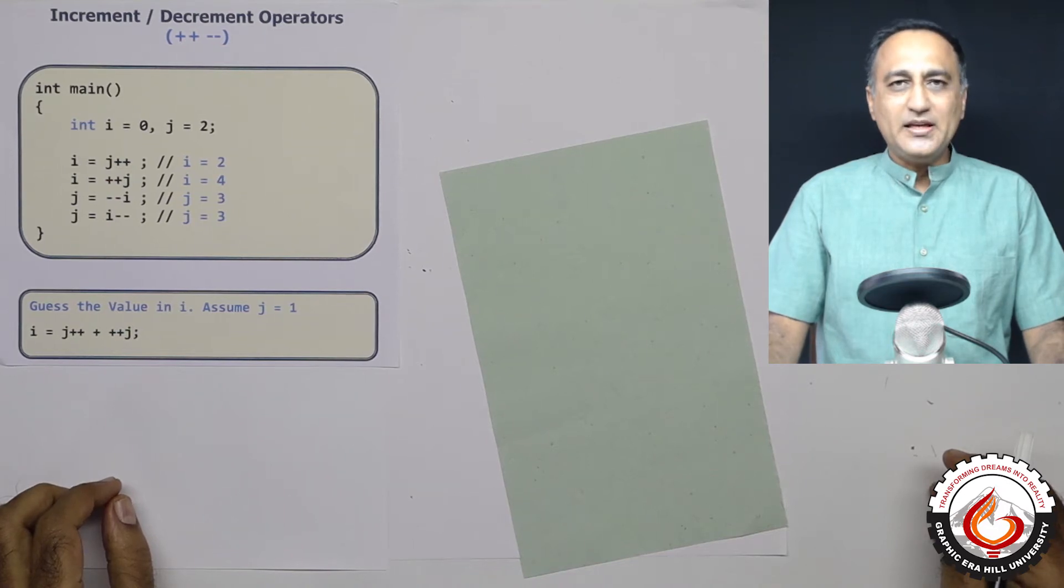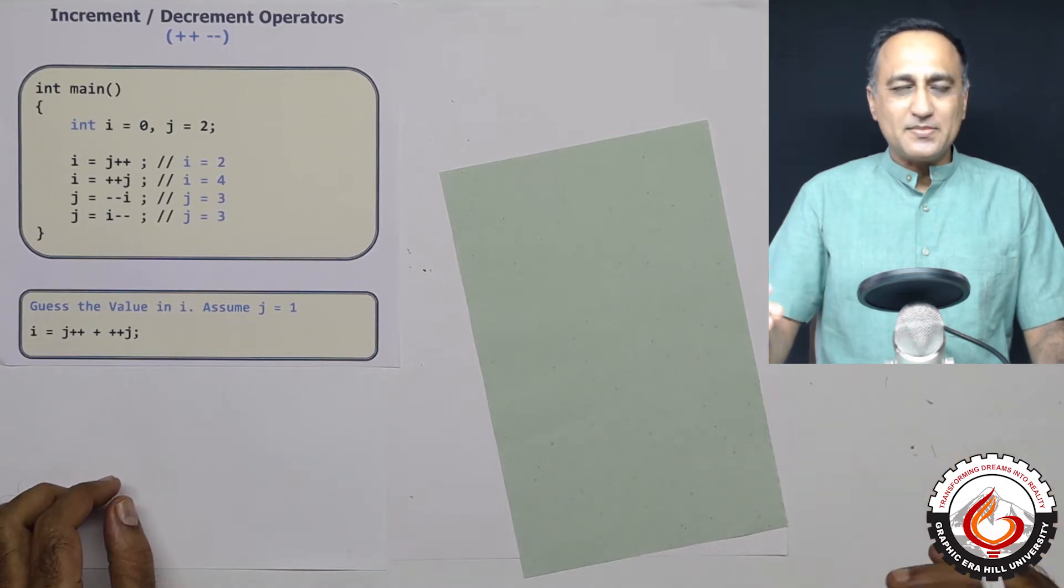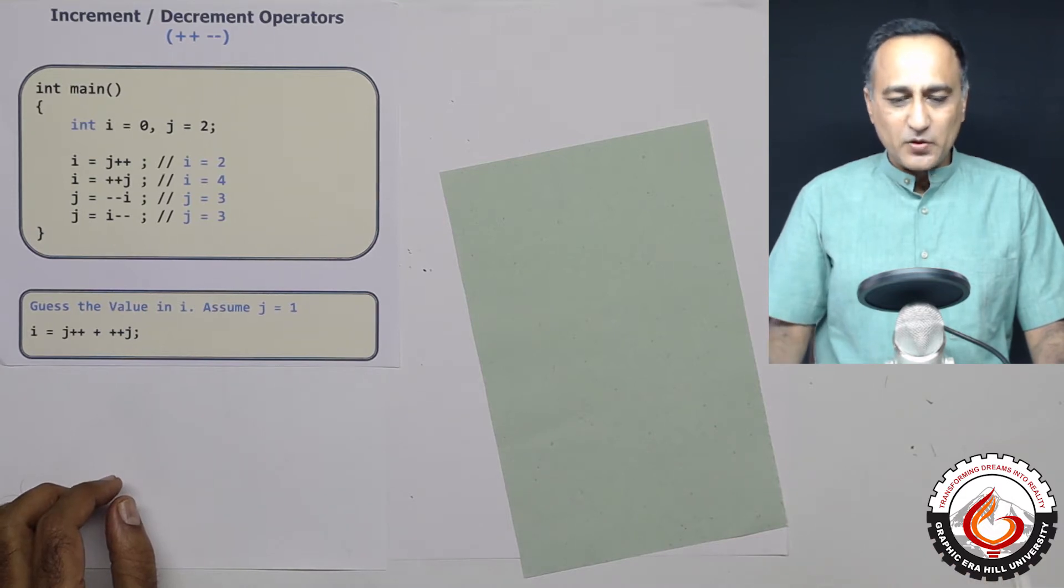This talk is about increment and decrement operators in C. By increment, you mean increasing something by a value. Decrement means decreasing something by a value.